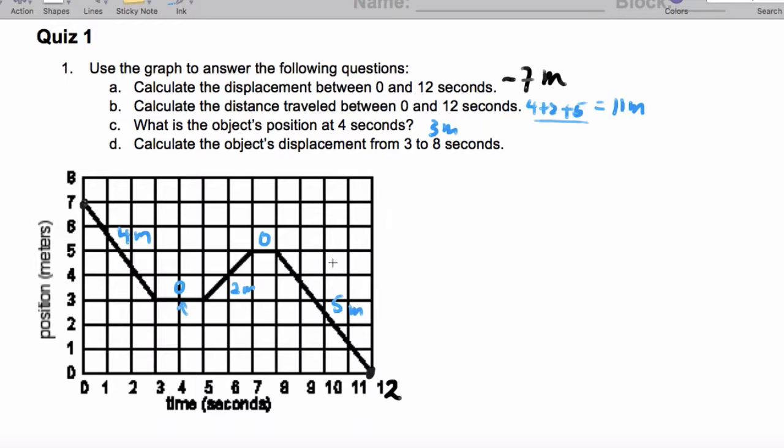And the displacement from 3 to 8 seconds - so at 8 seconds we're here, at 3 seconds we're here. So this is 5, this is 3. Basically it's x final minus x initial, which is 5 minus 3, and we end up moving forward 2 meters.